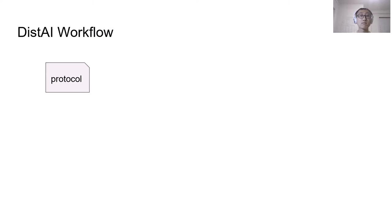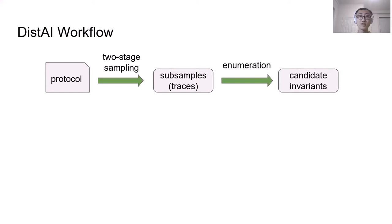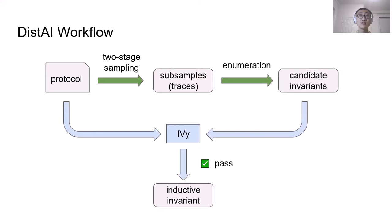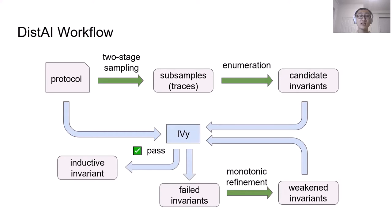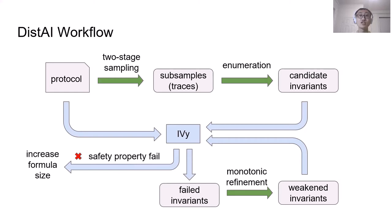Now we introduce the workflow of DistAI. Given the distributed protocol, we first simulate the protocol and get traces which we call subsamples. And then we enumerate all possible candidate invariants up to a bounded formula size. Then we feed the invariants and the protocol to IV to see if it can pass the check. If it passes, then we get an inductive invariant. But in most cases, it fails. And IV will tell us some invariants failed the check. And then we enter a monotonic refinement module to get weakened invariants, and then feed the weakened invariants back to IV again. We repeat this process until either we get an inductive invariant, or the safety property fails the IV check. In which case, we will increase the bounded formula size, and we redo the entire sampling, enumeration, and refinement process again.